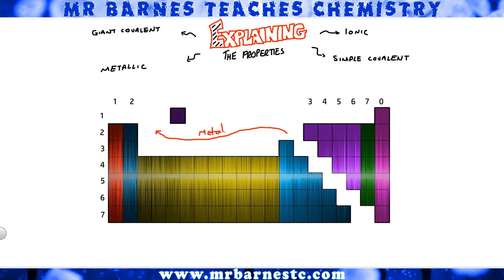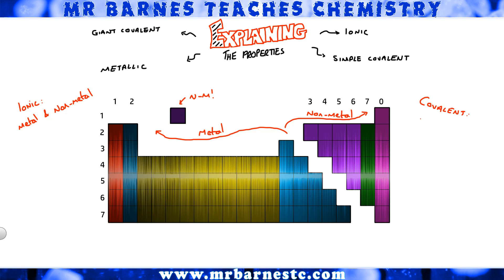To work that out, you need to know whether you have metals or nonmetals or both. Everything to the left of the zigzag on the periodic table is a metal; everything to the right is a nonmetal, with the exception of hydrogen, which is also a nonmetal. For something to be ionic it must contain metals and nonmetals. For it to be covalent it should only have nonmetals — both simple and giant covalent. For it to be metallic it should have only metals.